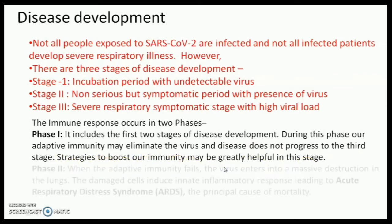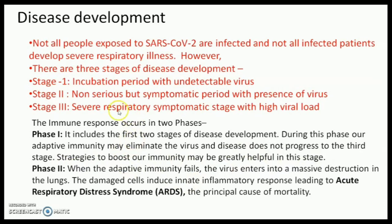In immune response Phase 2, what happens when Phase 1 fails is that the immune system enters stage 2. During this phase, the virus enters into massive destruction in the lungs, causing damaged cells to induce an innate inflammatory response. The inflammation is so high it is called hyper-inflammation, because it leads to acute respiratory distress syndrome, which is the principal cause of mortality.